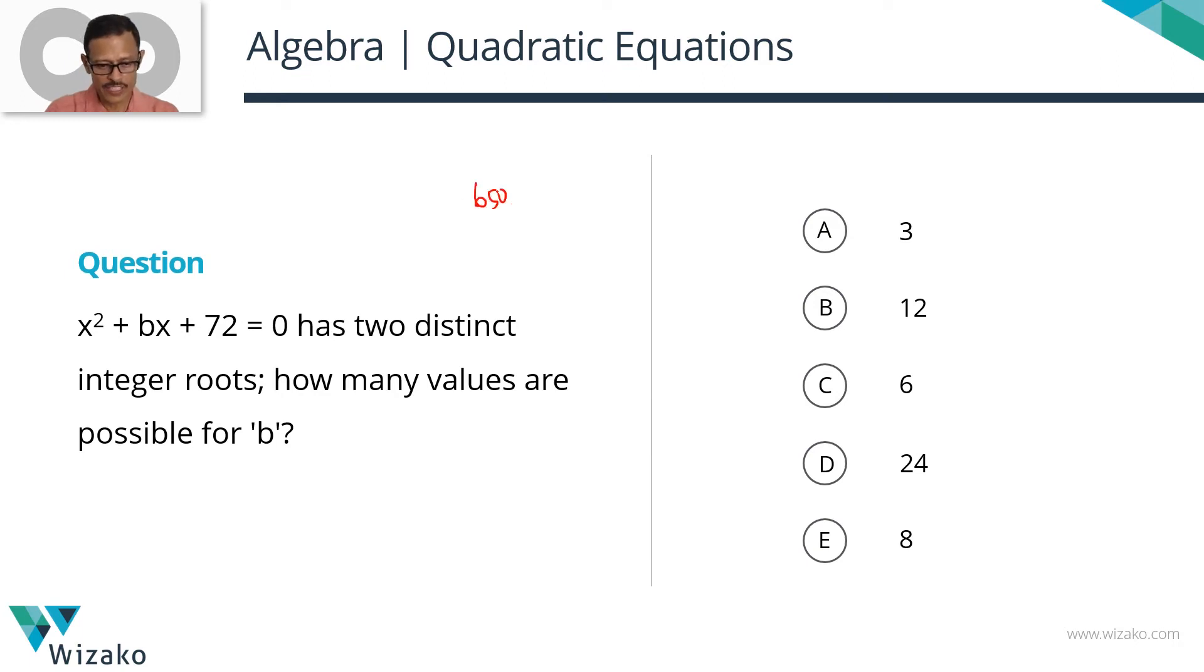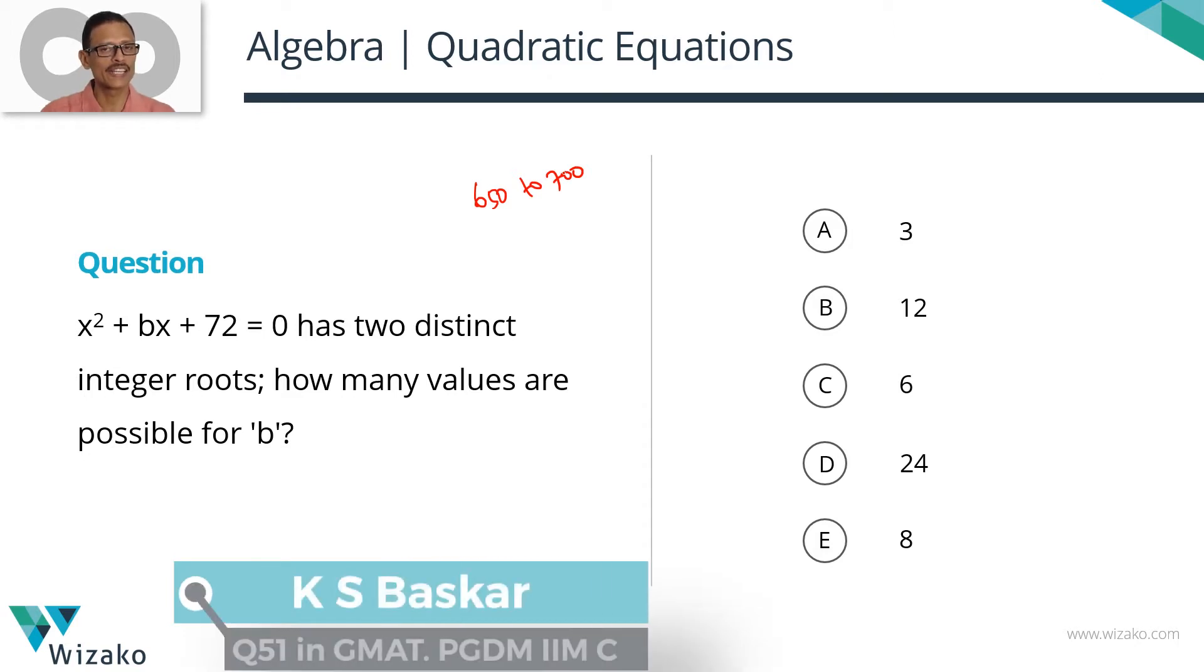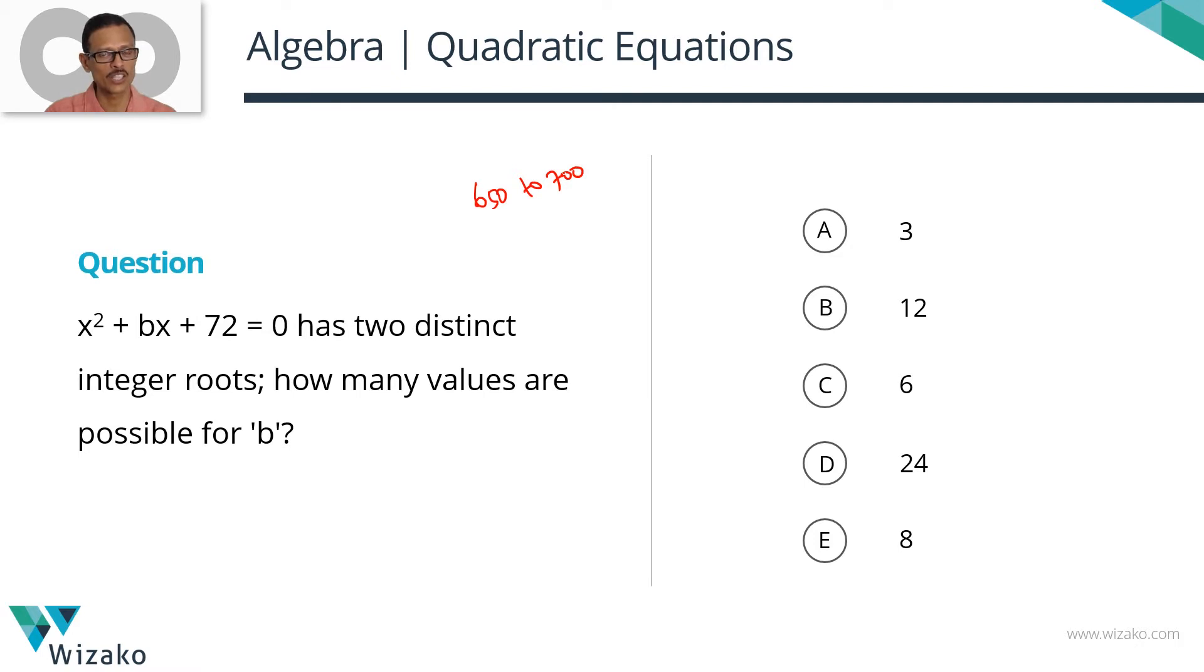This is a GMAT 650 to 700 level problem-solving question. It's an algebra question on quadratic equations. The core of what is tested in this question is your understanding about, given a quadratic equation, how does one find out the sum and product of the roots, and how does that relate to the coefficients of the terms?